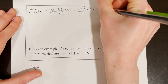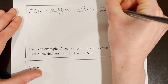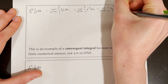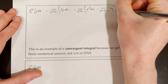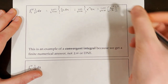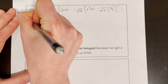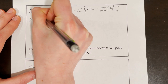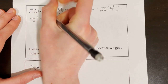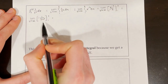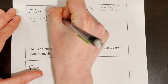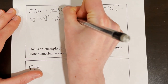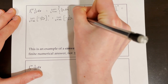Still keeping the limit on the front, we have the limit as t approaches infinity. The integral of x to the power of negative 3 is x to the power of negative 2 over negative 2, evaluated at bounds 1 and t. Now that we've found the antiderivative, we rewrite x to the negative 2 over negative 2 as negative 1 over 2x squared, evaluated from 1 to t. Using the fundamental theorem, we plug in t and subtract plugging in 1, giving us negative 1 over 2t squared minus negative 1 over 2 times 1 squared inside the brackets.